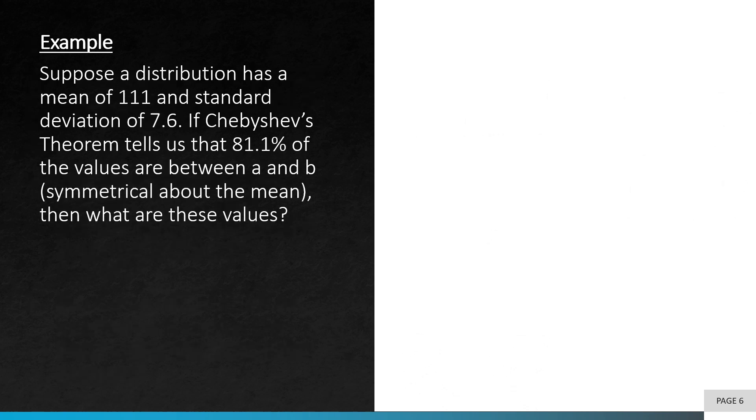Let's take a look at another example. Suppose a distribution has a mean of 111 and a standard deviation of 7.6. If Chebyshev's theorem tells us that 81.1% of the values are between a and b, which are symmetrical about the mean, then what are these values?